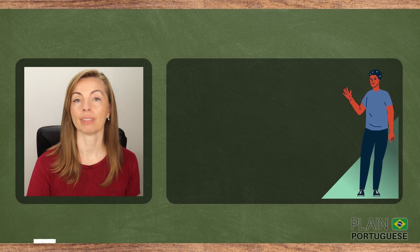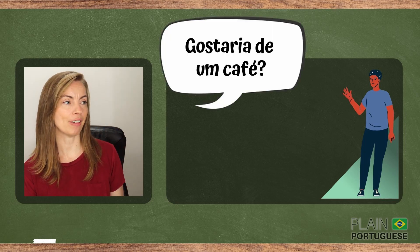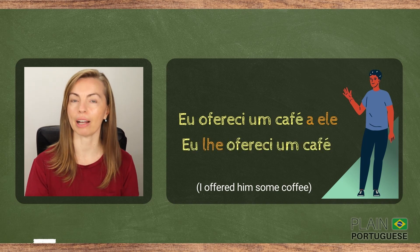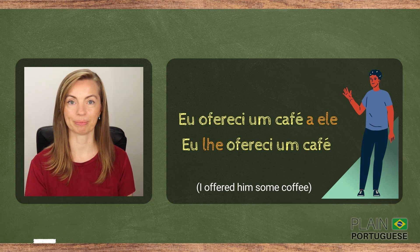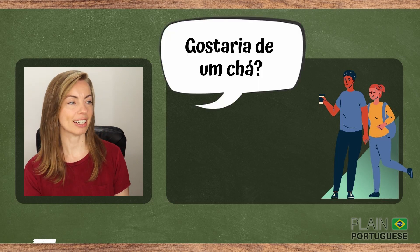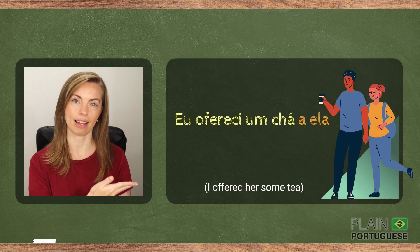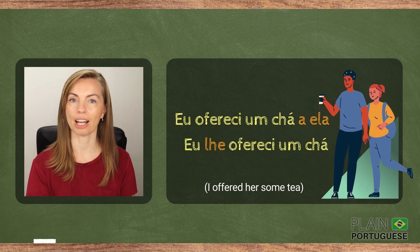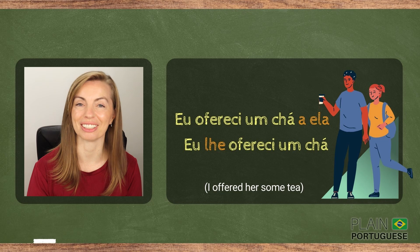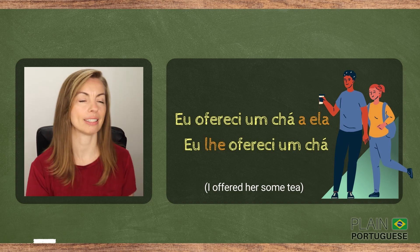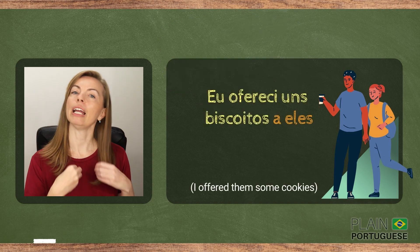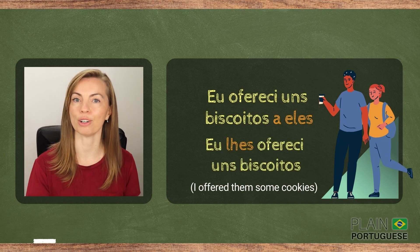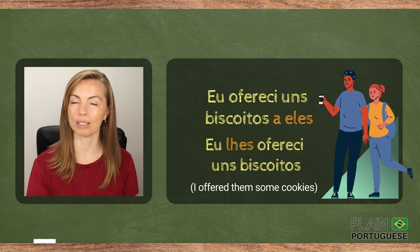A friend — I'll offer him some coffee. Gostaria de um café? Eu ofereci um café a ele. Or: Eu lhe ofereci um café. And his girlfriend — Gostaria de um chá? Eu ofereci um chá a ela. Or: Eu lhe ofereci um chá. Eu não lhe ofereci café. I'll see if they would like some cookies — Gostariam de uns biscoitos? Eu ofereci uns biscoitos a eles. Or: Eu lhes ofereci uns biscoitos.